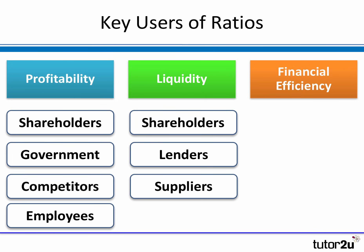Liquidity ratios also have lots of users interested in them. In particular, lenders and suppliers are particularly interested in whether a business is able to pay its debts. If you're a supplier offering credit to a business, you want to be pretty satisfied that the business will be able to pay your invoices when they become due. Similarly, a lender like a bank would look very closely at the liquidity position of a business to make sure it is able to pay the interest and capital amounts owed on a bank loan.